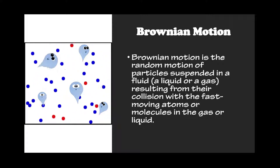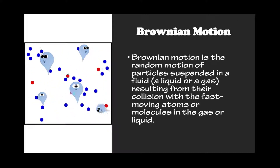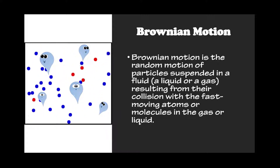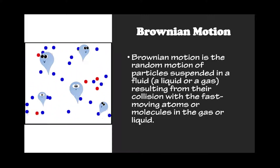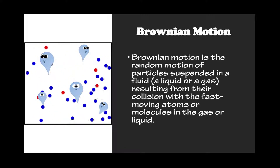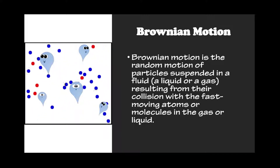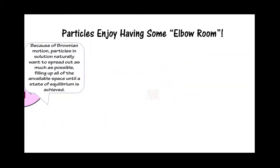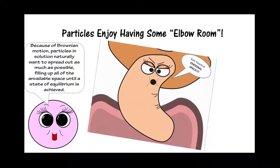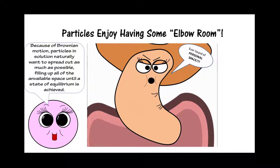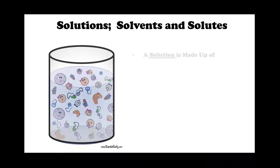Because of this fact, there is something called Brownian motion. Brownian motion is the random motion of particles suspended in a fluid — a liquid or a gas — resulting from their collision with the fast-moving atoms or molecules existing in that gas or liquid. Particles enjoy having some elbow room. Because of Brownian motion, particles in solution naturally want to spread out as much as possible, filling up all of the available space until a state of equilibrium is achieved.